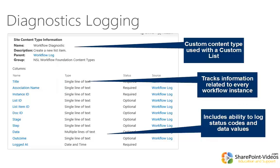Another list that gets created in the supplemental workflow solutions is called the Diagnostic Log. This includes a number of different columns that allow us to track diagnostic information logged from each workflow — columns to track the individual instance like the association name, workflow instance ID, list ID, etc. We also have fields where we can log data: the current stage, the current step, and a catch-all data column where we can dump in a bunch of variable values.